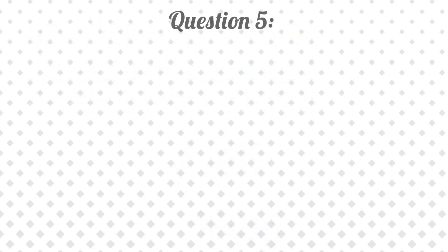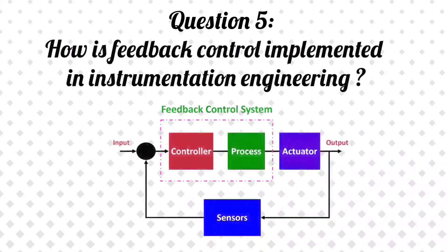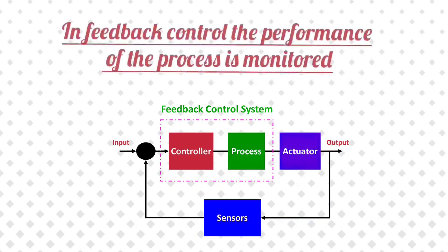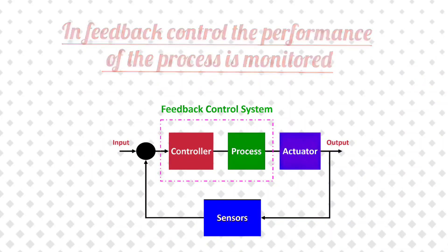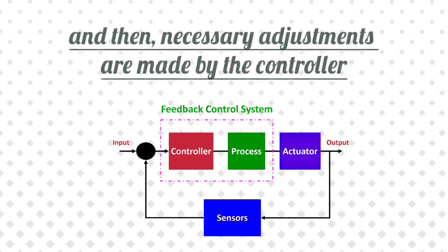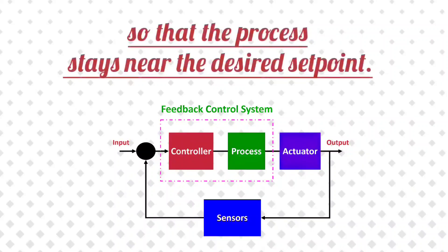Question 5: How is feedback control implemented in instrumentation engineering? Answer: In feedback control, the performance of the process is monitored, and then necessary adjustments are made by the controller so that the process stays near the desired set point.